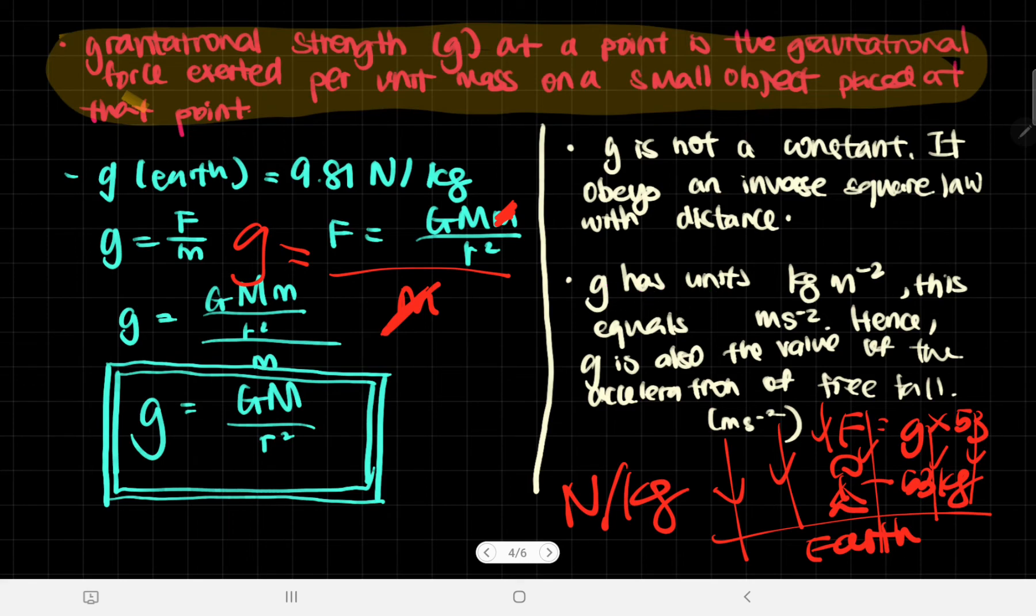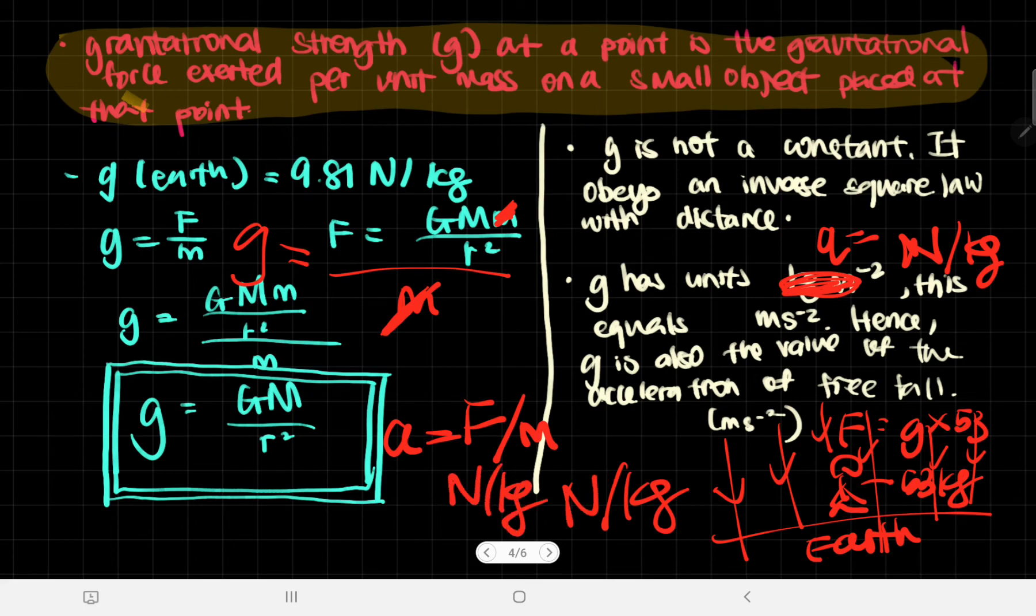g has units newtons divided by kg. And this equals meters per second squared. It's because acceleration is force divided by mass. And that is N divided by kg. So this, because that is g, we can also convert this directly into meters per second squared.